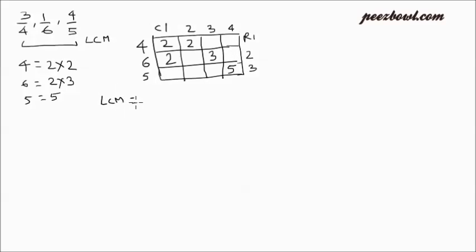Let us multiply all the prime factors together to get the LCM of 4, 6, and 5. The only condition is that in any column, we should not have any duplicate number. If we have duplicates in any column, then we need to consider that number only once. For example, in column number 1, we have 2 and 2, so we consider it only once. Writing the value of column 1: that is 2. Then in column 2, we have only one entry, so multiplied by 2. In column 3, we have 3. In column 4, we have 5.